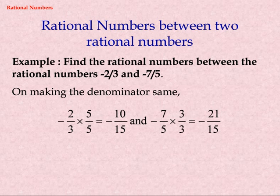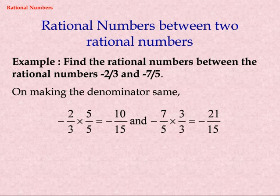Rational Numbers between two Rational Numbers. Example: find the rational numbers between minus two thirds and minus seven fifths. On making the denominator the same: minus two thirds multiplied by five fifths equals minus ten fifteenths, and minus seven fifths multiplied by three thirds equals minus twenty-one fifteenths.